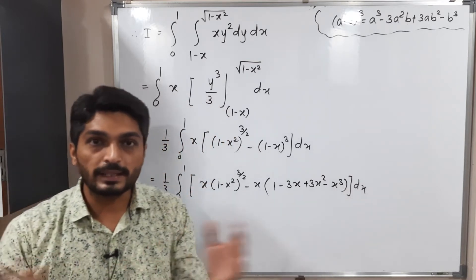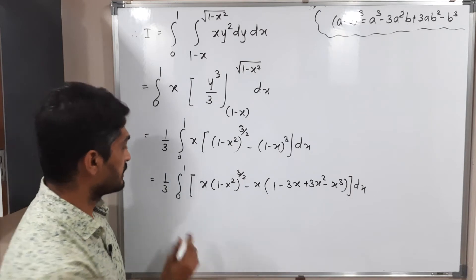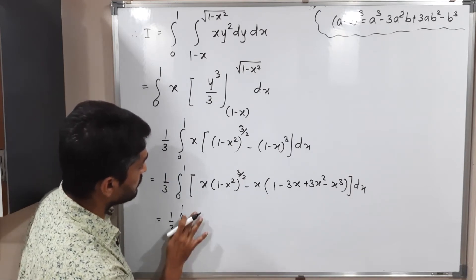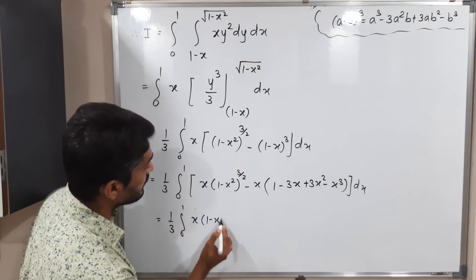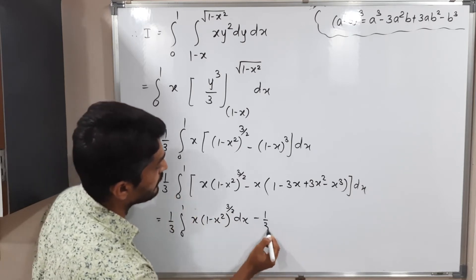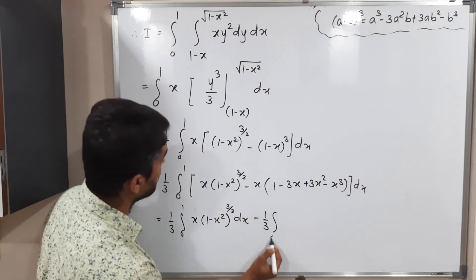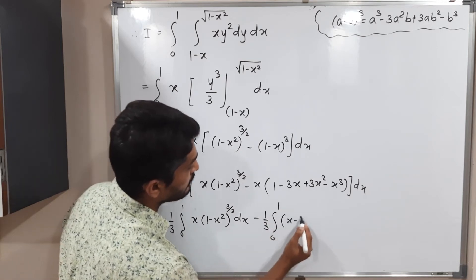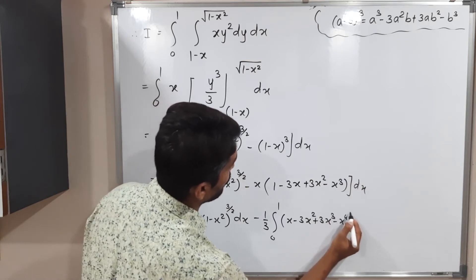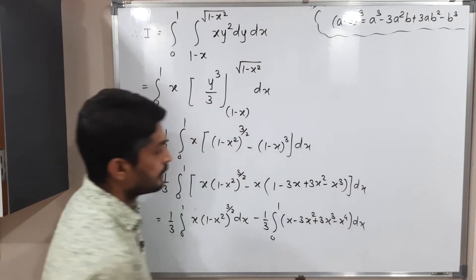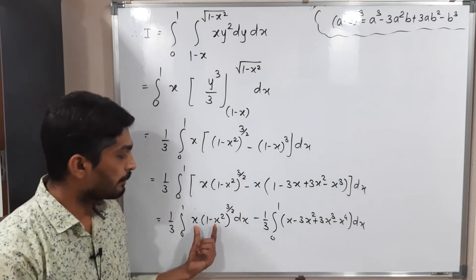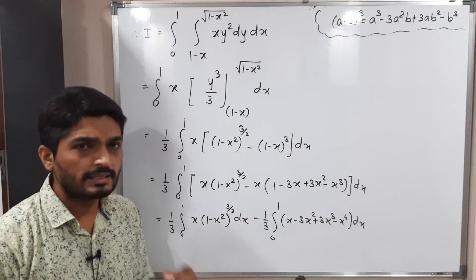So this equals (1/3) times the integral from 0 to 1 of x·(1 minus x²)^(3/2) dx, minus (1/3) times the integral from 0 to 1 of x·(1 minus 3x + 3x² minus x³) dx, which expands to x minus 3x² + 3x³ minus x⁴ dx. The second integration can be solved easily using standard formulae, but the first one requires substitution.